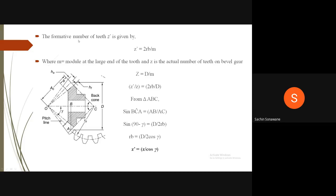The formative number of teeth Z' is given by Z' = 2RB/M, where M is the module at the large end of the tooth and Z is the actual number of teeth on the wheel gear. We know that Z = D/M. Therefore, dividing these two equations, Z'/Z = 2RB/D.